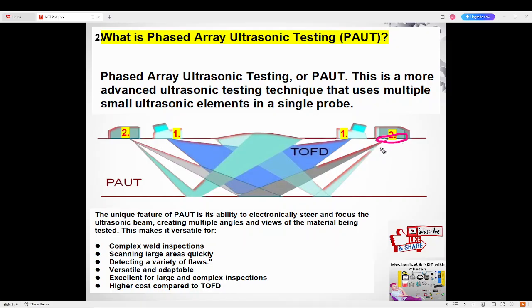So the sound waves are transmitted and received by multiple waves. The unique feature of PAUT is its ability to electronically steer and focus the ultrasonic beam, creating multiple angles and views of the material being tested. This makes it versatile for complex weld inspections and scanning large areas quickly, detecting a variety of flaws. It's versatile and adaptable.